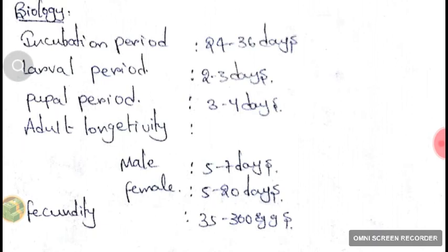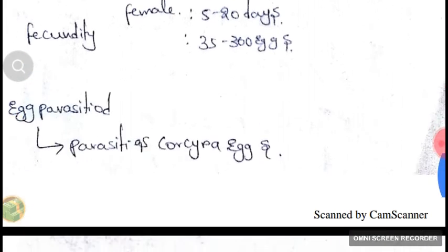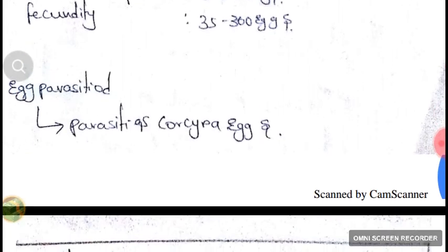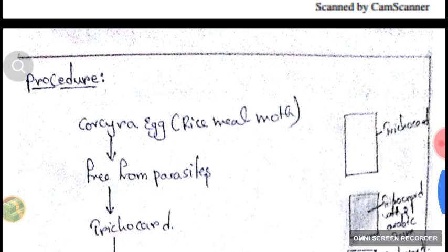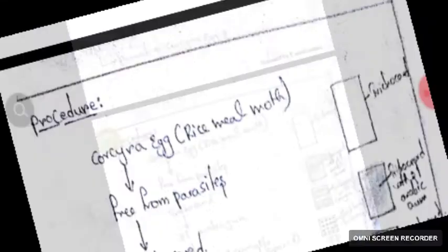In summary, the biology: incubation period is 24 to 36 days, larval period 2 to 3 days, pupal period 3 to 4 days, adult longevity for male 5 to 7 days, female 5 to 20 days, and fecundity 35 to 300 eggs. Trichogramma parasitizes on Corcyra eggs. Corcyra is also called the rice meal moth. Let's see the procedure of multiplication of Trichogramma.